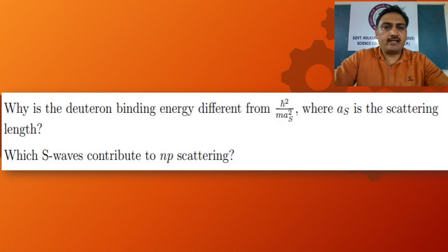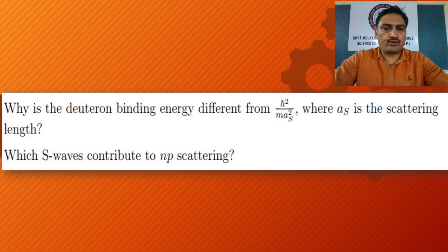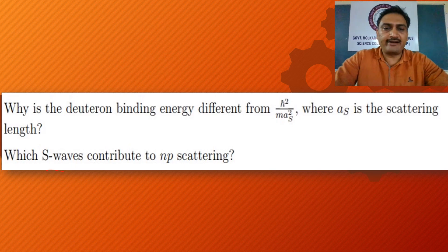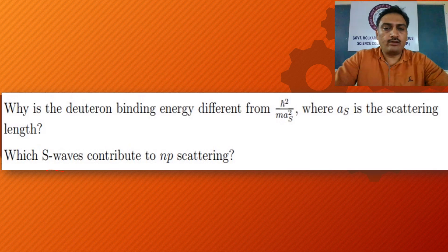While understanding neutron-proton scattering at low energies, I would suggest these two questions to be answered by students watching this video. They should write a short note on the following two questions: one, why is the deuteron binding energy different from ℏ²/MA_s² where A_s is the scattering length; and two, which states will contribute to neutron-proton scattering.